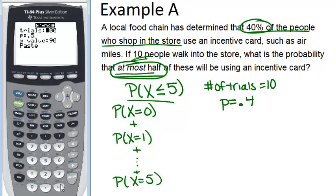Now on this page we need to type in the number of trials which is 10, the probability of success which is 0.4. In this case using an incentive card is like success. And then the x value which is the maximum number of successes that we want, so that's 5. And then go down to paste, click enter and click enter again.